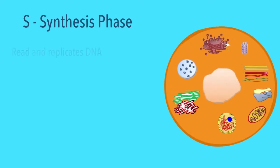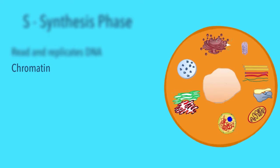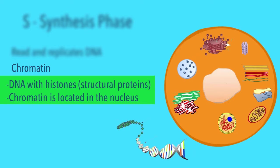The S phase, also known as the synthesis phase, reads and replicates DNA, making it a duplicate of chromatin. Wait, what is a chromatin again? Chromatin is DNA with histones, which are structural proteins. Essentially, chromatin is a long thread of information.